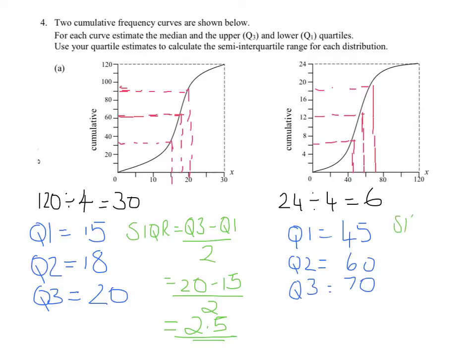Semi-interquartile range, same thing. It's quartile 3 minus quartile 1 divided by 2. 70 minus 45 over 2, which is 25 over 2, which is 12.5.